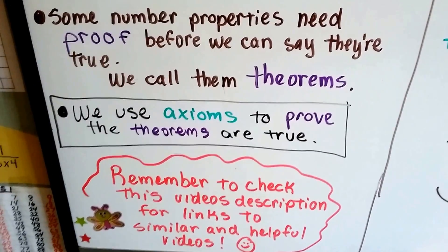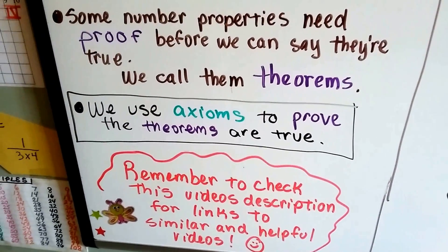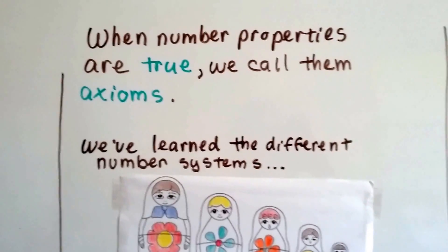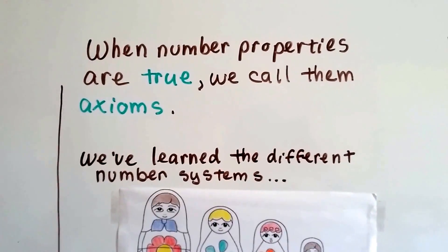Now remember to check this video's description for links to similar and helpful videos, in case you're confused. When number properties are true, we call them axioms.